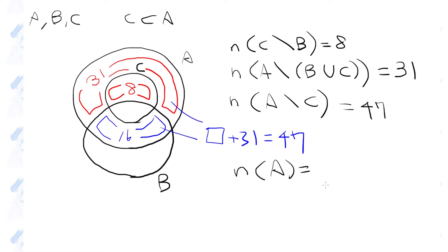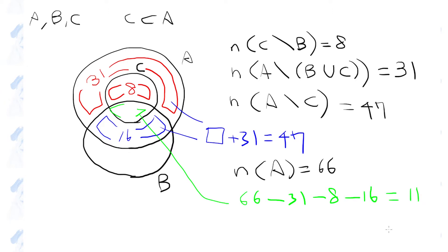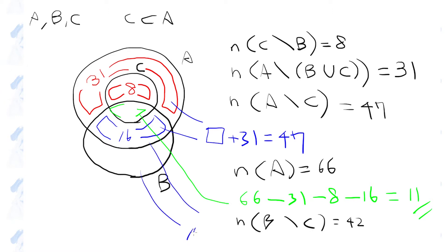And since the number of elements in set A is 66, the region in green can be calculated by 66 minus 31 minus 8 minus 16, which gives 11. And finally, the number of elements in B but not in C is 42. 16 plus something is equal to 42, so this region here must be 26.